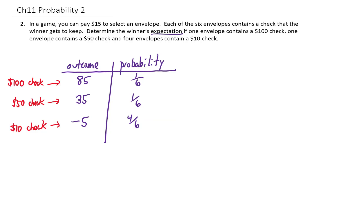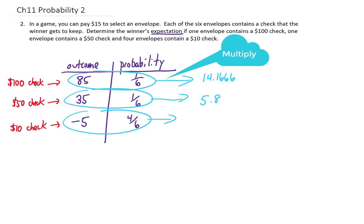Now, to calculate an expected value, you multiply every outcome by every probability. Multiplying 85 times 1 sixth gives us 14.1666 repeating. Multiplying 35 by 1 sixth gives us 5.8333 repeating. And multiplying negative 5 times 4 sixth gives us negative 3.333 repeating. Then what we do with all of these products is we add them all together.